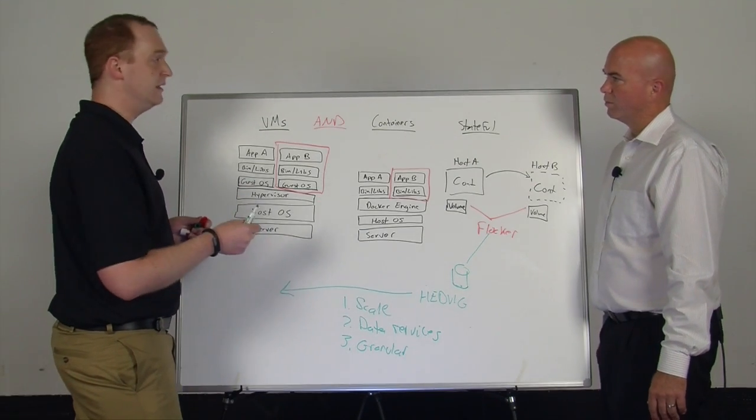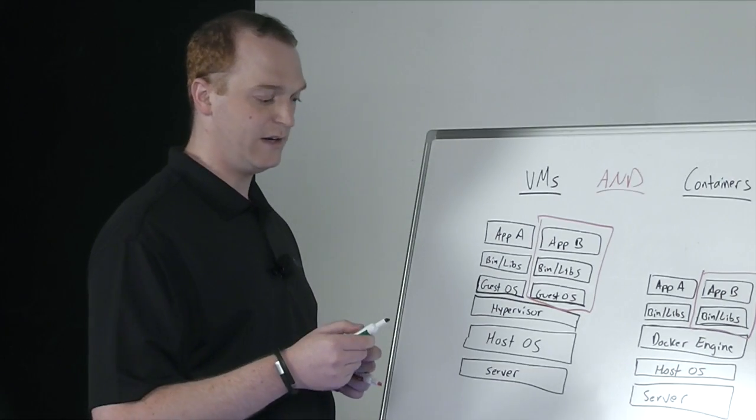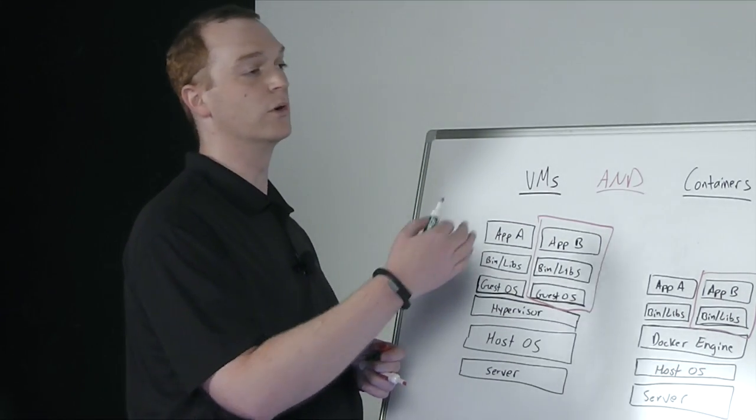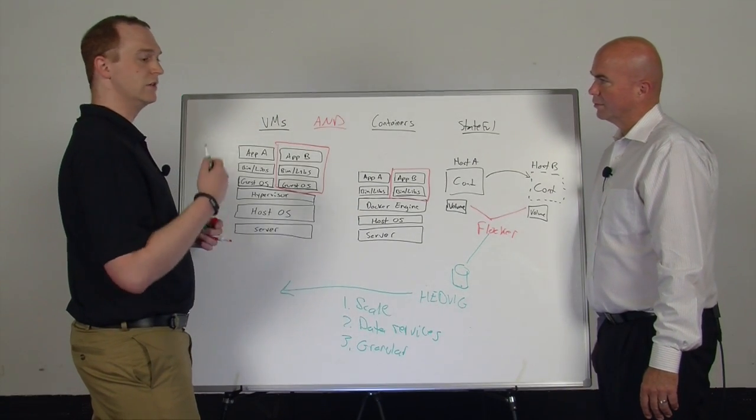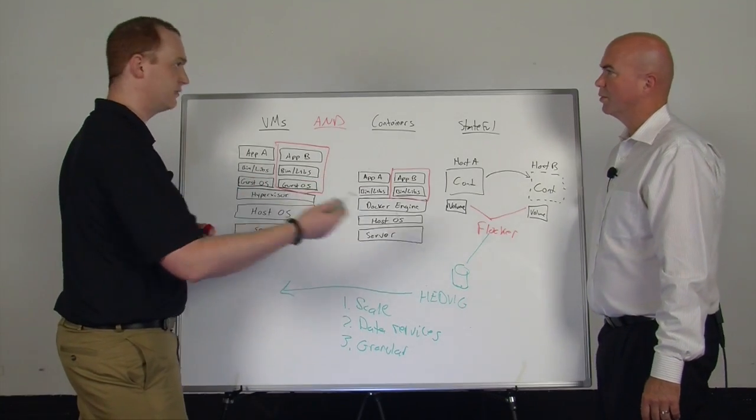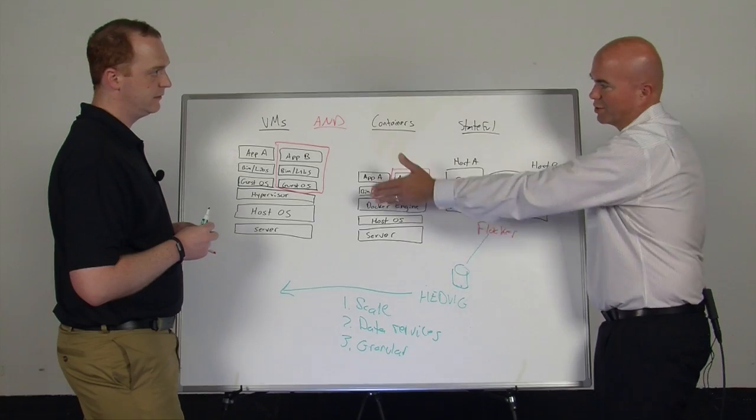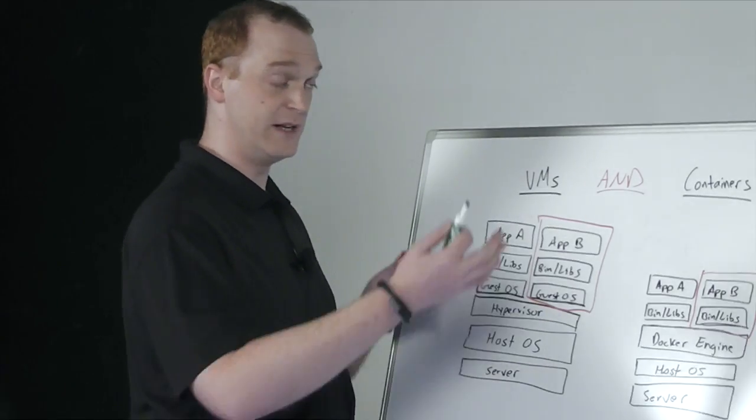Each microservice may need its own unique storage services. And so to be able to do that, we've developed an engine that allows us to have a per-VM or per-container level of granularity. Each one of these data services can have its own unique replication, its own unique DR, its own unique dedupe compression, et cetera. And that becomes critical in this environment because we could have thousands of these containers versus maybe a few hundred virtual machines.